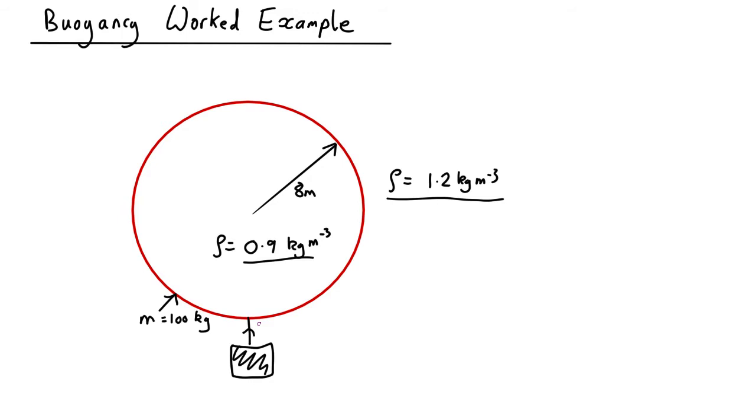Now to calculate this, we have to work out the buoyancy force on the sphere and take off the weight of the sphere. Now the buoyancy force is just going to be the weight of all the air that would have been here, the cold air that would have been there if the balloon wasn't there. So the mass is going to be the density outside, let's call that ρ₀, times the volume. Volume of a sphere is 4/3 π r³. So the buoyancy is going to be that times g.